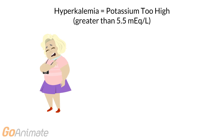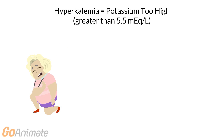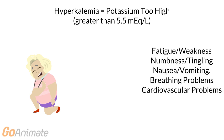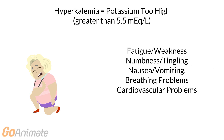Disorders of potassium concentration include hyperkalemia, or high plasma potassium greater than 5.5 milliequivalents per liter. Hyperkalemia can be caused by kidney disease, Addison's disease (which affects the adrenal glands), tissue damage, potassium supplements, and some blood pressure medications such as angiotensin-converting enzyme inhibitors, which have a potassium-sparing effect.